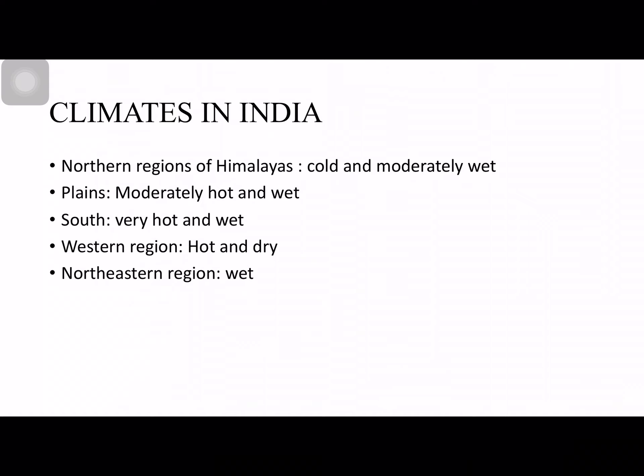The first climatic region is the Himalayas region — it is cold and moderately wet. The second is the plains — moderately hot and wet. The south is very hot and wet. The western region is hot and dry. The northeastern region, also known as the Seven Sisters — Nagaland, Kohima, Mizoram, Arunachal Pradesh, Assam — is quite wet. Previously Cherrapunji had the highest rainfall in India, but now Mawsynram is the place which gets the highest rainfall.